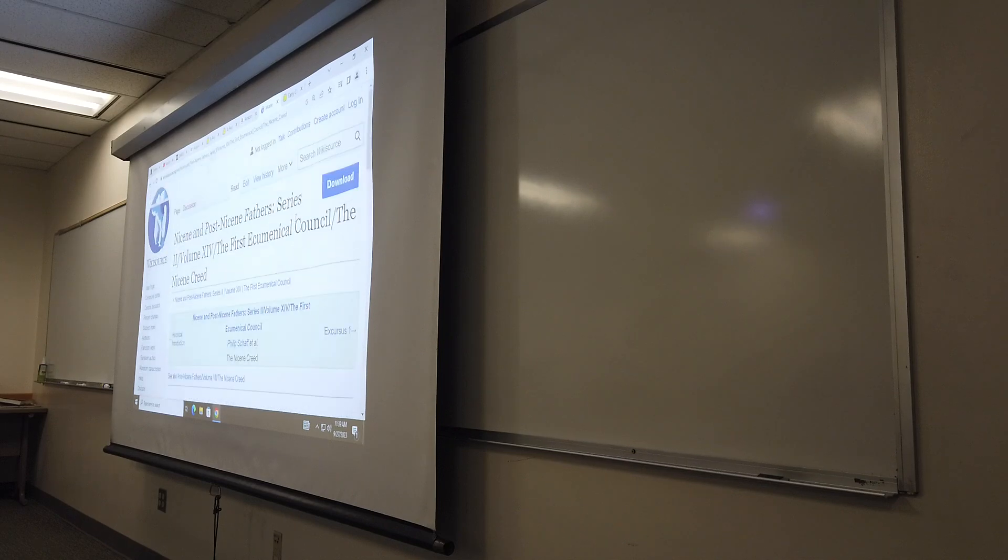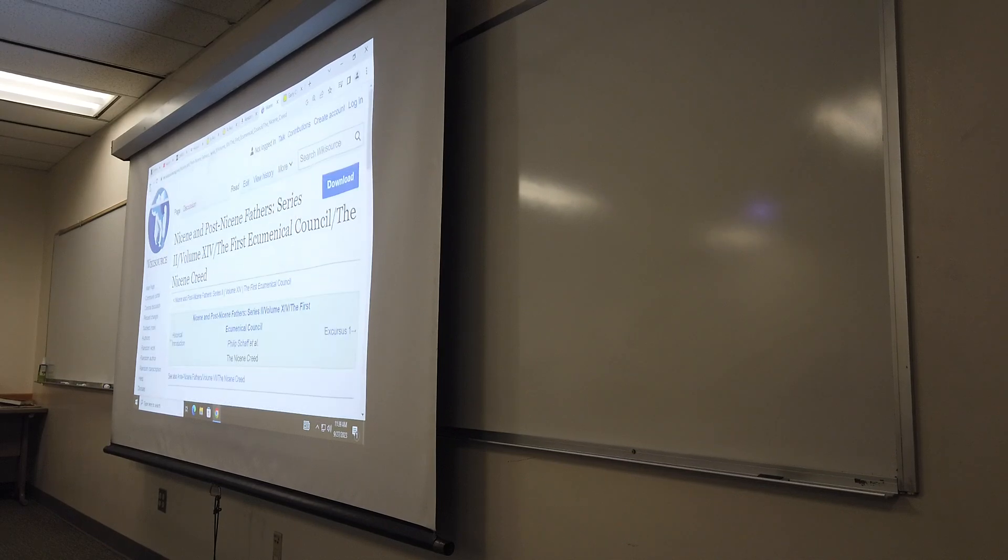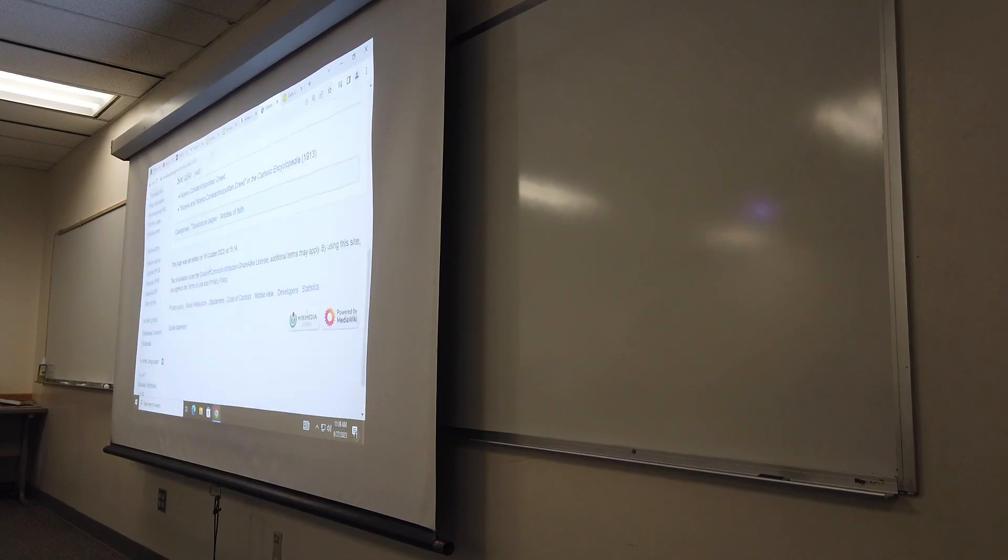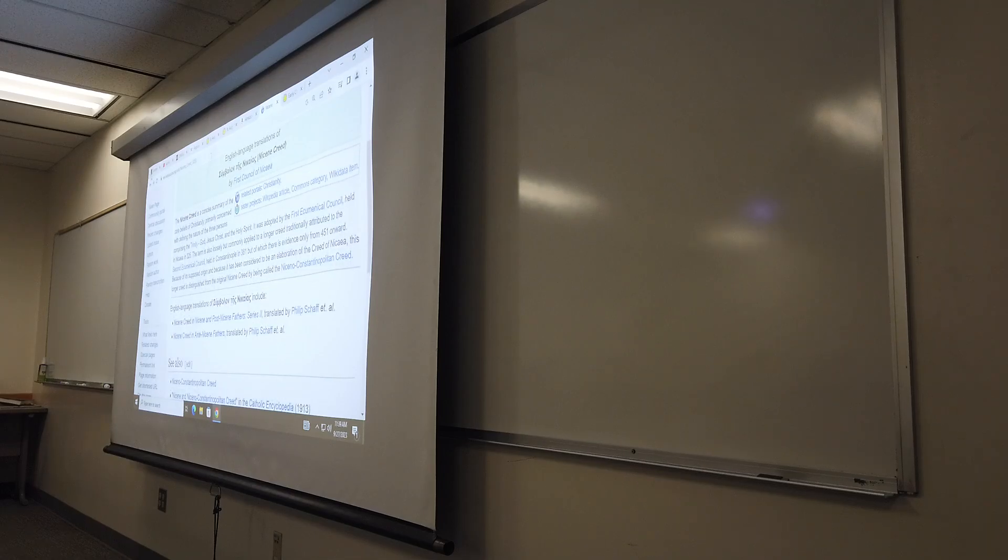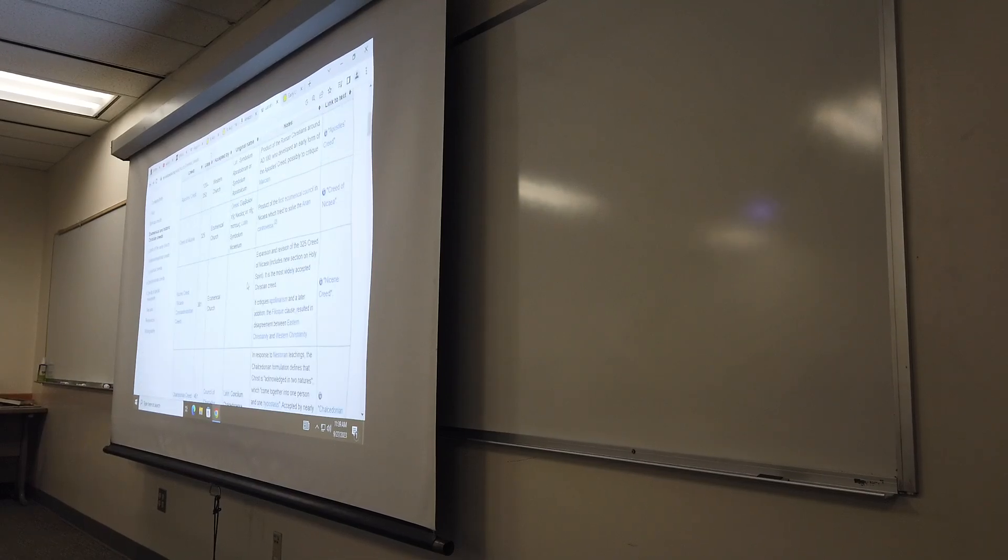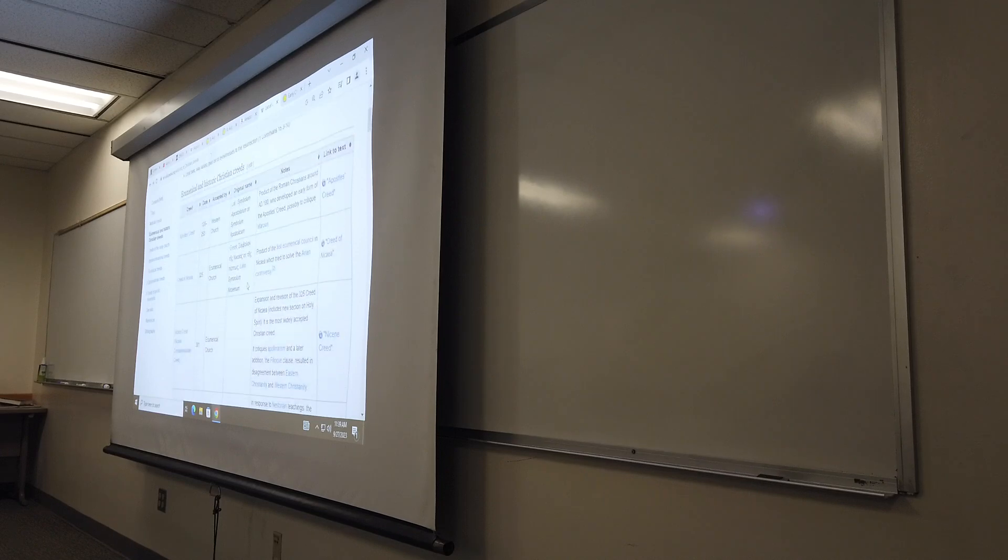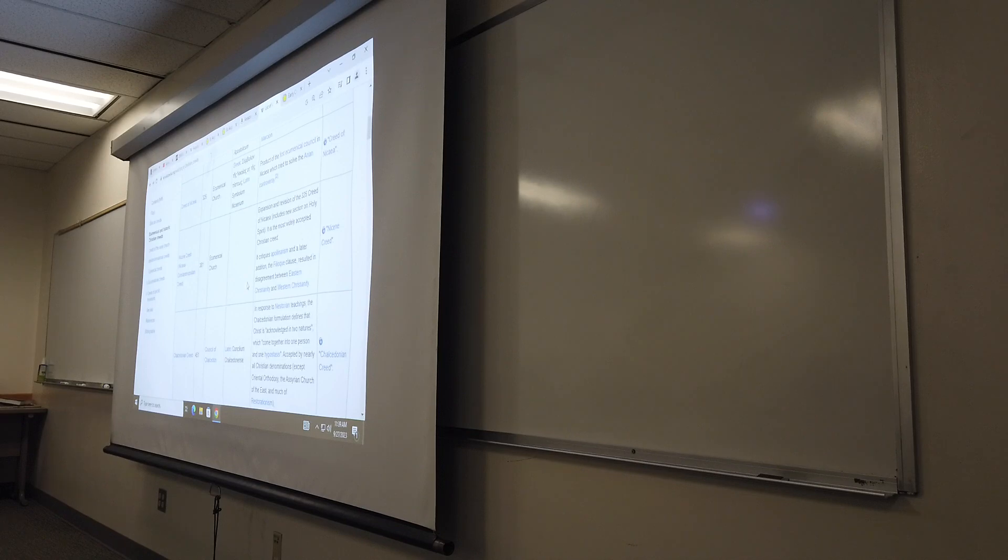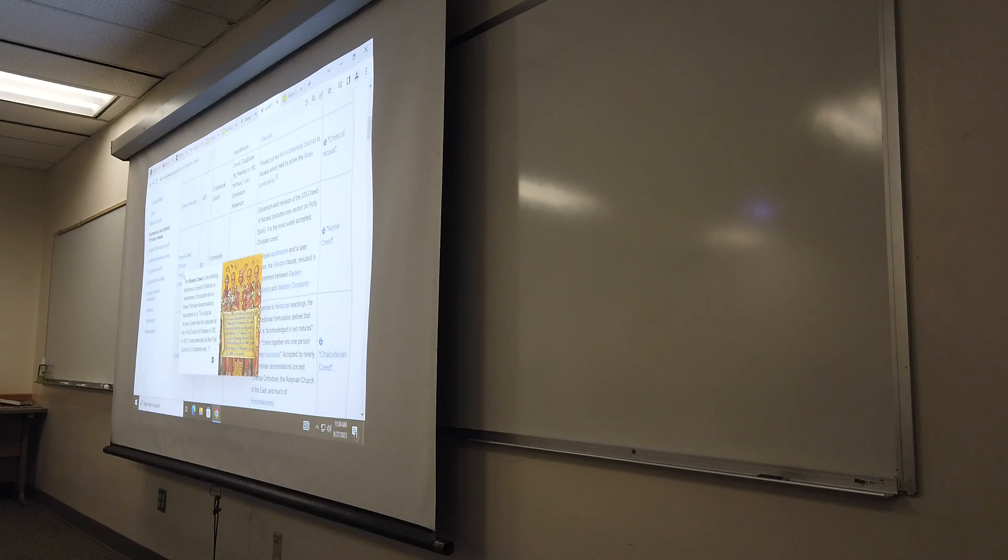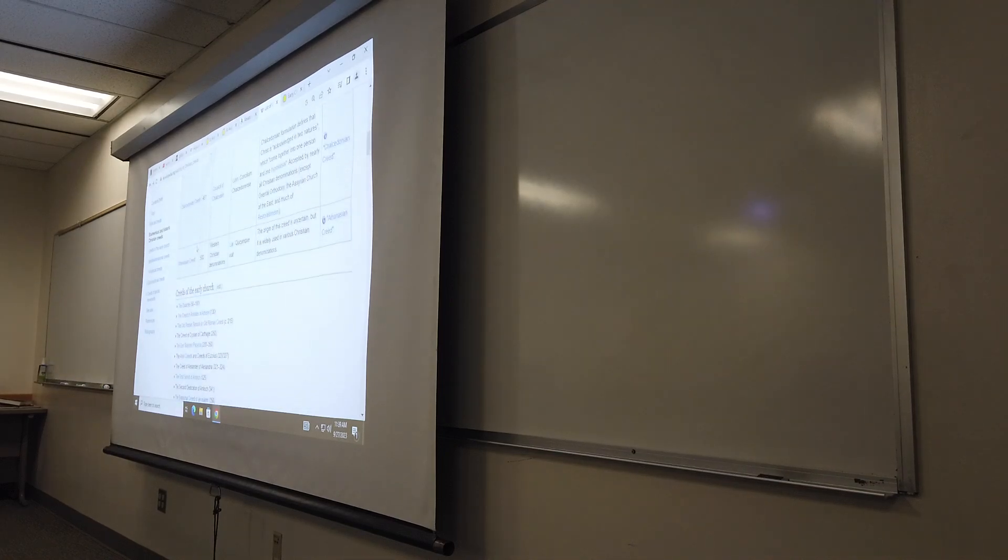Notice there's lots of different creeds. I thought it was pretty neat how some of them are counted. I mean, these are just some of the main ones. The earlier one, Apostles' Creed, Creed of Nicaea, the Constantinople Creed, amended at the next council, I guess, Chalcedonian, Athanasian.